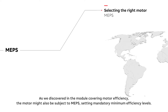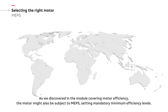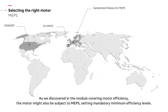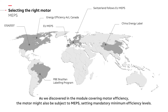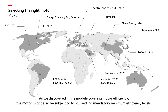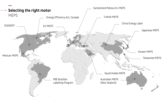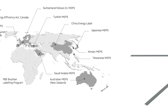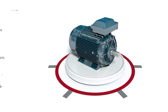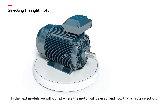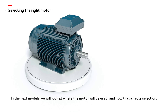As we discovered in the module covering motor efficiency, the motor might also be subject to MEPS, setting mandatory minimum efficiency levels. In the next module we will look at where the motor will be used and how that affects selection.